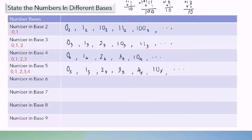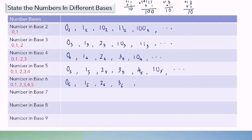Number in base 6: we have digits 0, 1, 2, 3, 4, and 5. If I write in sequence: 0 base 6, 1 base 6, 2 base 6, 3 base 6, 4 base 6, 5 base 6, and so on.